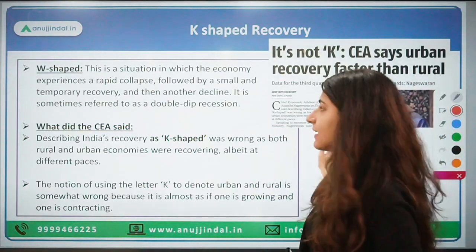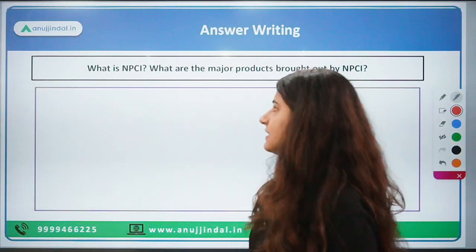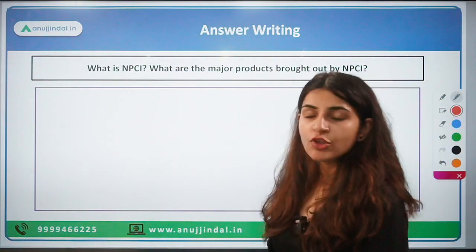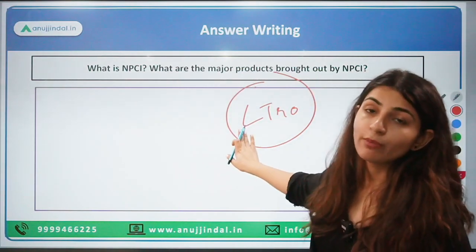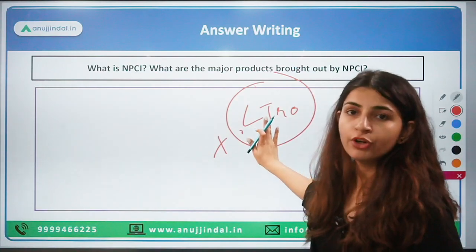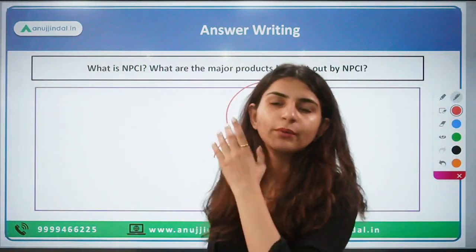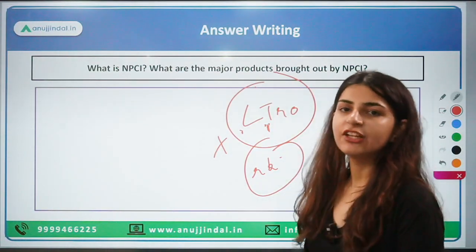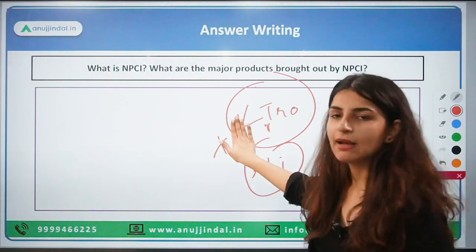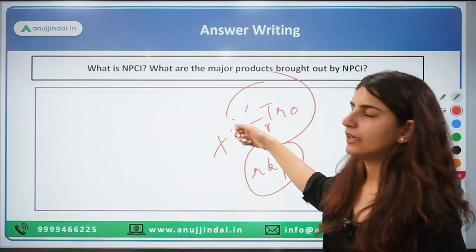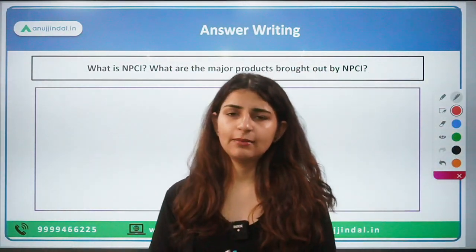K-shaped recovery is in news and can be asked in your exam. As promised in the previous video, we will now do answer writing practice. The question for today is: What is NPCI and what are the major products brought out by NPCI? If you remember, last year there was a descriptive answer on Long-Term Repo Operations in finance, which RBI brought out during COVID to inject liquidity in the economy, and it appeared in the 2022 RBI exam — so current affairs questions are important.